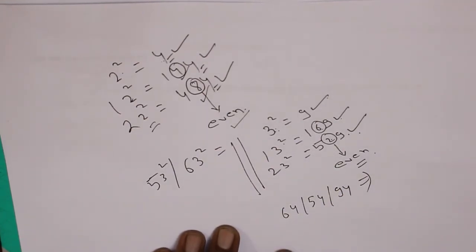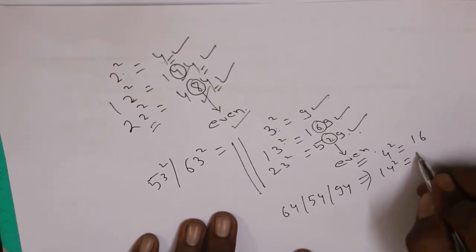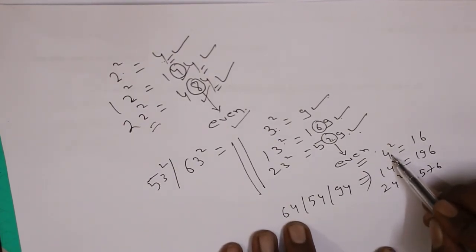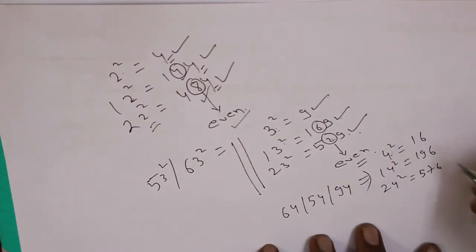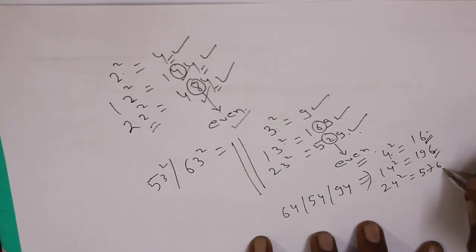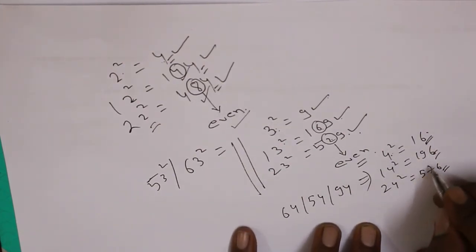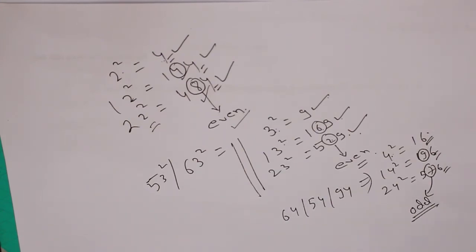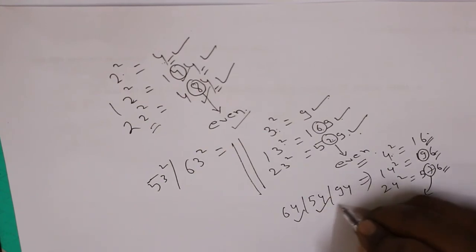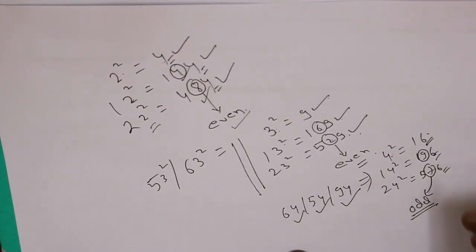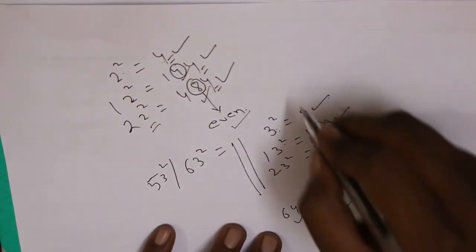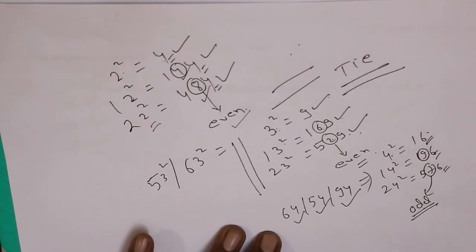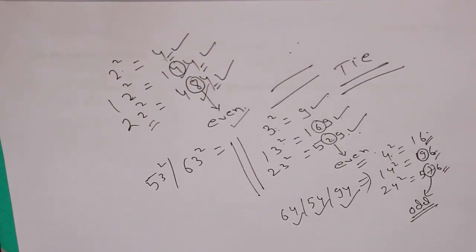Similarly for 64, 54, or 94 — if you need a tie-breaking rule: 4 ka square is 16; 14 ka square is 196; 24 ka square is 576. So if a number ends in 4, its square's unit digit will be 6. But here the difference is that the second last digit is odd. So the tie-breaking rule: if a number ends in 4, its square's second last digit will always be odd. Like this, concepts for 2, 3, 4 have been shown — you can build your own rules for other digits and solve tie-breaking cases. This was the concept of digital sum using which we have solved bigger simplification problems quite easily in less time.